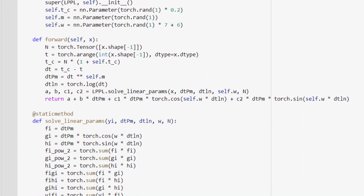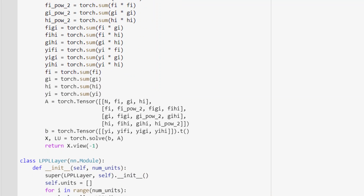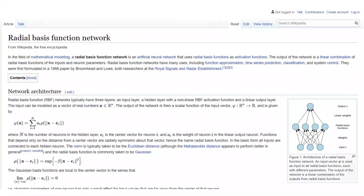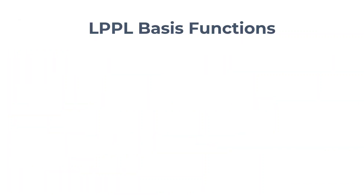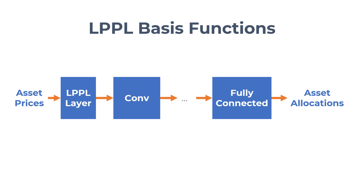Instead, I came up with a more computationally feasible approach. I used log-periodic power law in the basis functions of a neural network. Just like RBF networks use radial basis functions, I used LPPL basis functions. I defined a layer having several LPPL functions with randomly initialized parameters and stacked a few convolutional and fully connected layers to process the residuals. Unfortunately, I didn't have much luck with this approach. If you manage to come up with a strategy that can actually beat the market consistently, let me know in the comments — or don't, and keep your profits to yourself, just like any rational investor would do.